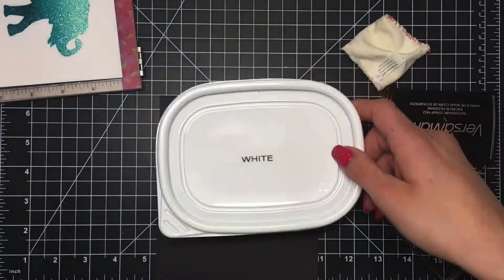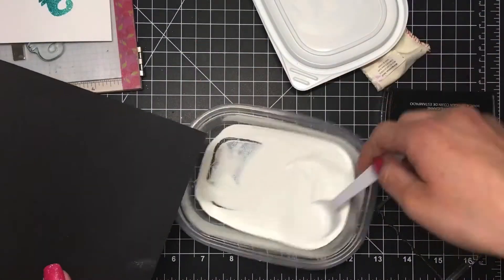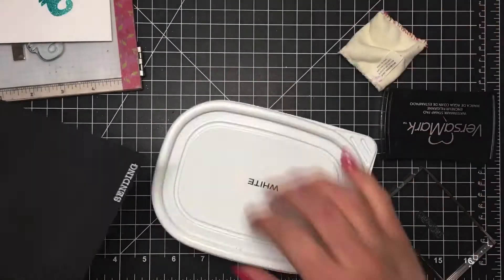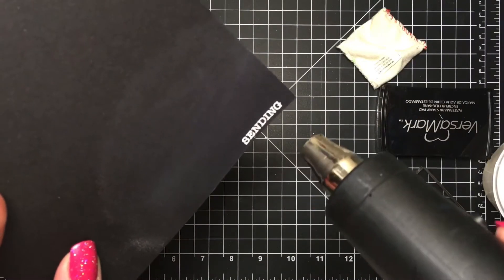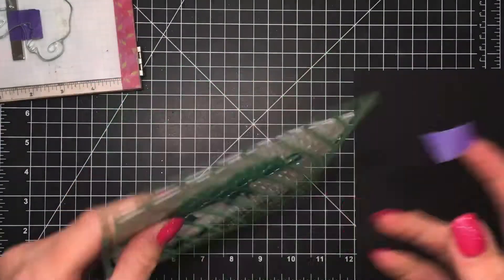I just did all of this while I had my heat gun out and I will be using some Hero Arts White Embossing powder and again I will heat set that with my heat gun.